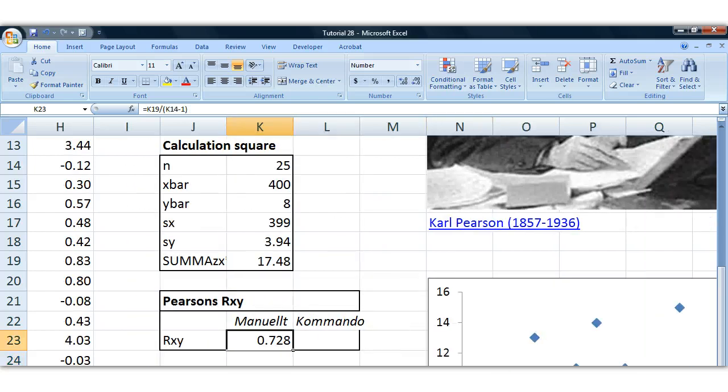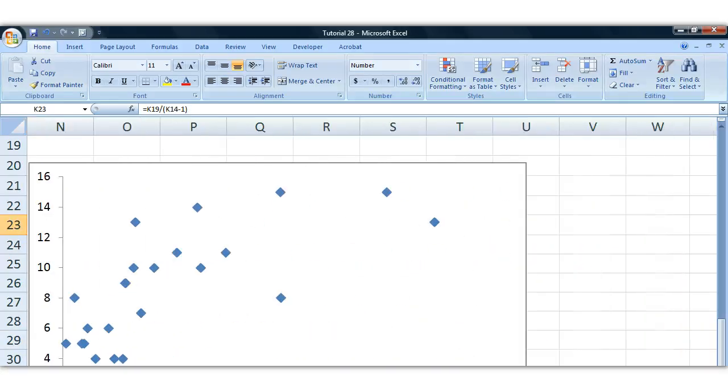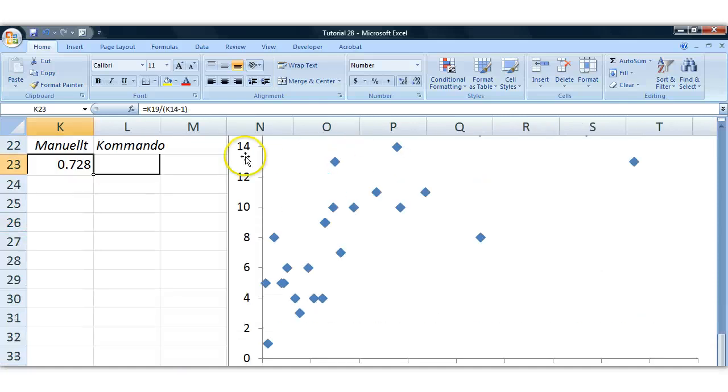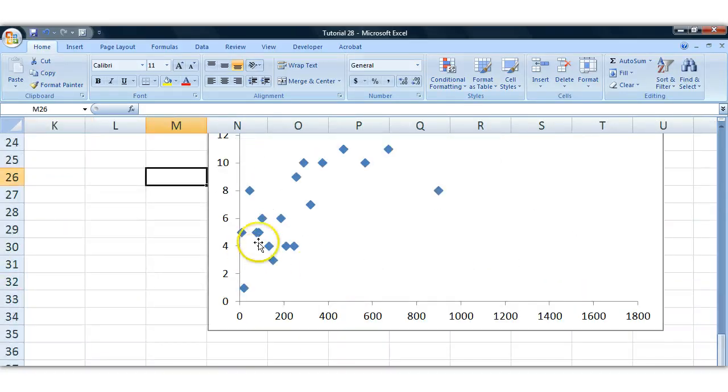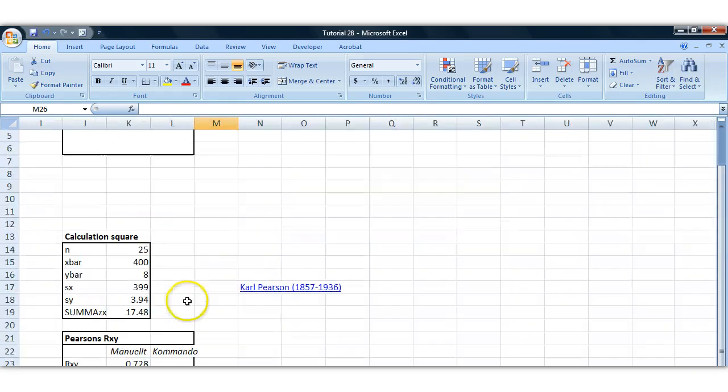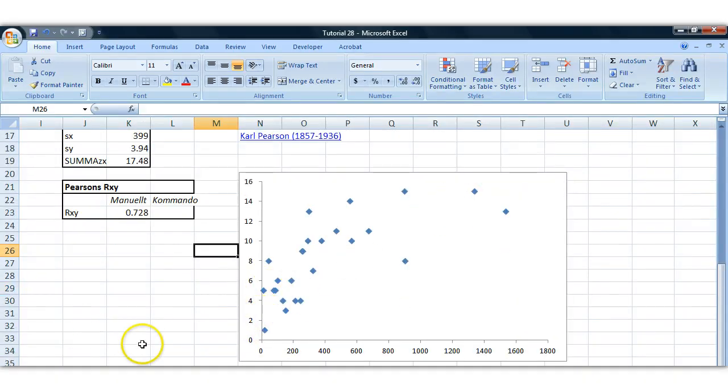And I think that fits well with our scatterplot here, where we said in the beginning of this tutorial that it seems like we have a positive correlation. You can see that there seems to be a positive correlation.